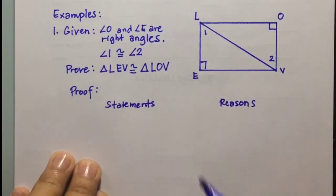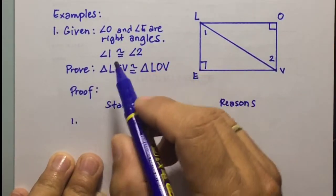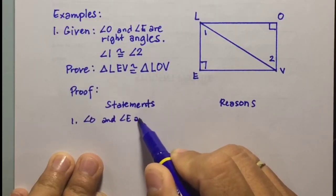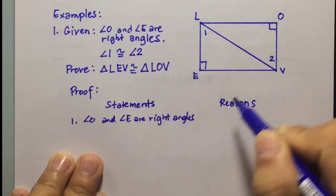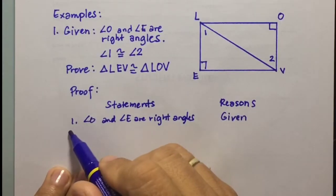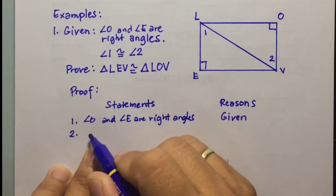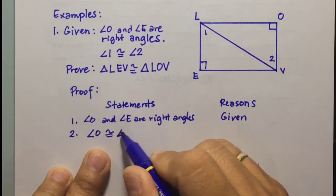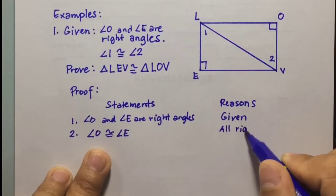For our first statement, we have the first given: angle O and angle E are right angles. The reason is given. For statement two, since these two angles are right angles, we can say angle O is congruent to angle E. The reason is: all right angles are congruent.